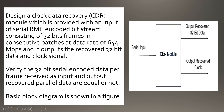Now let us discuss what should be the output of this CDR. At the output of this CDR module, we have 32-bit data lines along with one clock signal. As mentioned earlier, no clock is supplied along with the serial data input.